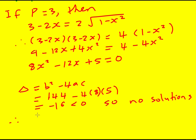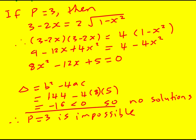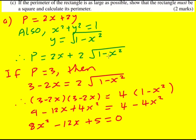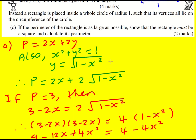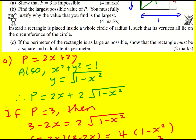Therefore p equals 3 is impossible. That is a solid way of doing this question. I'm just going to show you how the model answers did it — they basically did it the same way, but they avoided getting a square root, which is quite good.